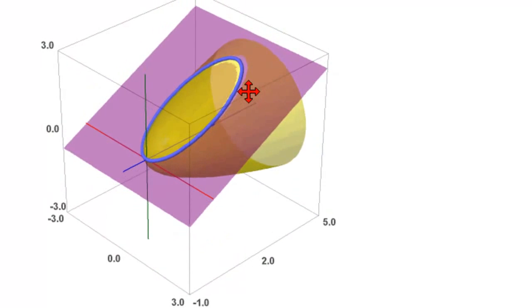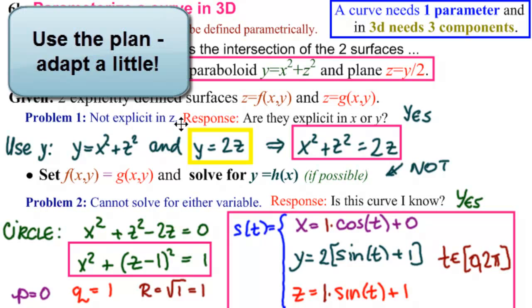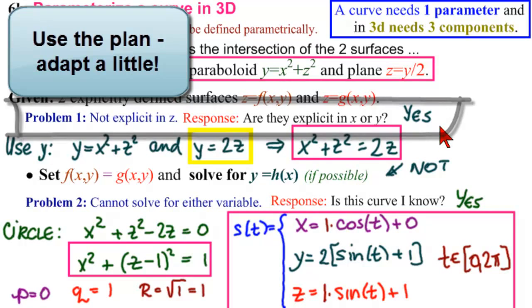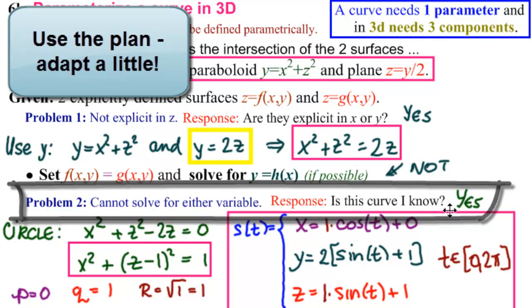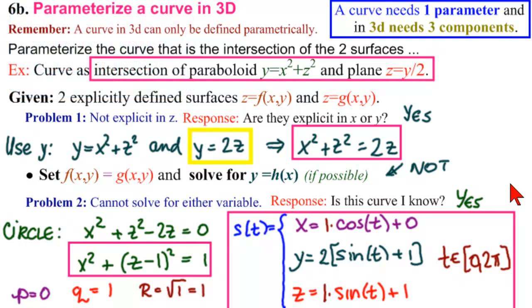So we just want to remember that when you get stuck in one, try to move just a little bit off. It wasn't explicit in z. Can we move it to x or y? Yes. Good job. Do that. We couldn't solve it explicitly for one of those variables. Could we see what it was? Yes. Start from the basic methods and adapt as you need to.